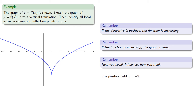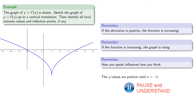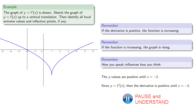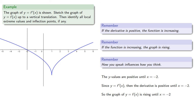For example, we could say that 'it is positive until x equals negative 2,' but we won't. What we really mean is that the y values are positive until x equals negative 2. And since y equals f prime of x, the derivative is positive until x equals negative 2, so the graph of y equals f of x is rising until x equals negative 2.